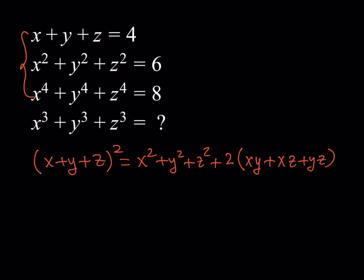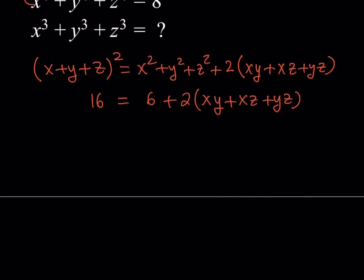Since we know x plus y plus z, we can just square it, and that's going to be 16, and we also know x squared plus y squared plus z squared, which is six. So we can replace that, and from here, we should be getting something nice. So I'd like to subtract six from the 16, that's 10, divide by two, so that should give me five.